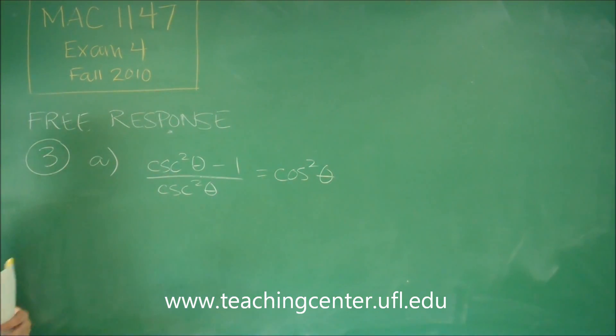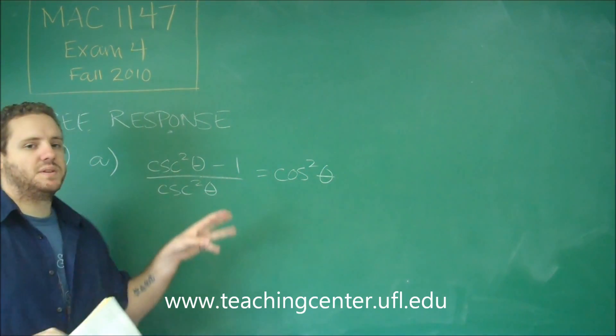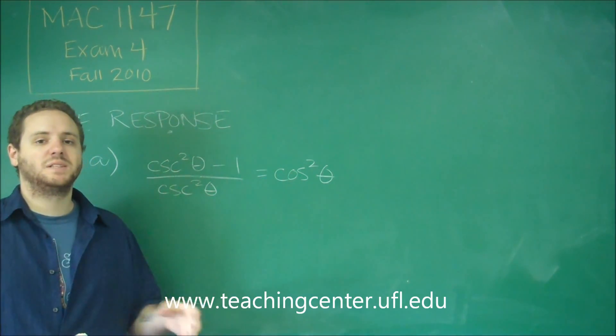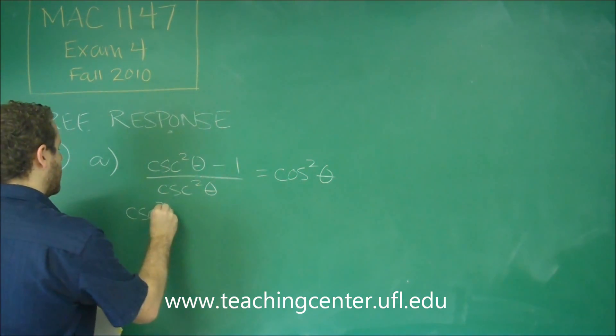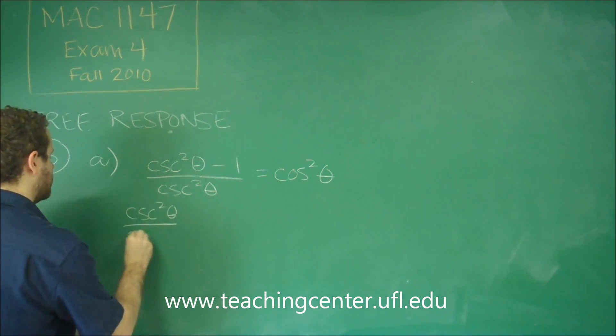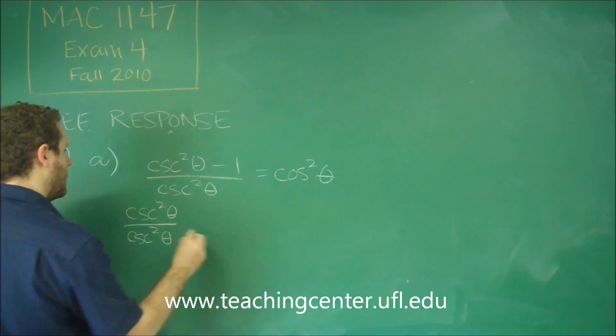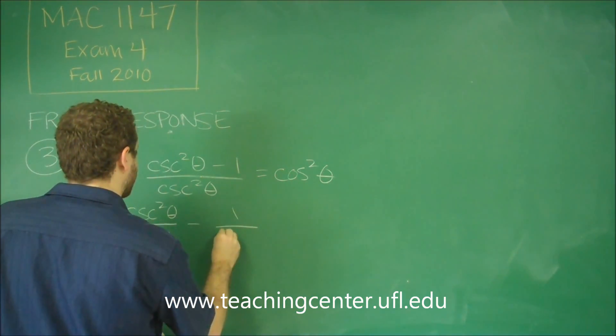So what you should notice here is that since we have cosecant both in the top and the bottom and our denominator is only a single term, we want to split this into two fractions. So this is really cosecant squared theta over cosecant squared theta minus one over cosecant squared theta.